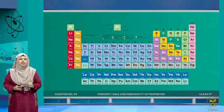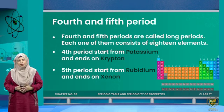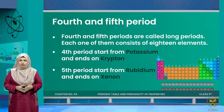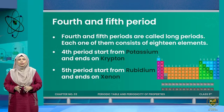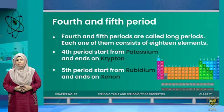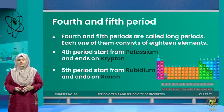The 4th and 5th periods are called long periods. They are long — not longest — because they each contain 18 elements. The 4th period starts with potassium and ends on krypton, which is also a noble gas. The 5th period starts with rubidium, which is an alkali metal, and ends on xenon, which is also a noble gas.